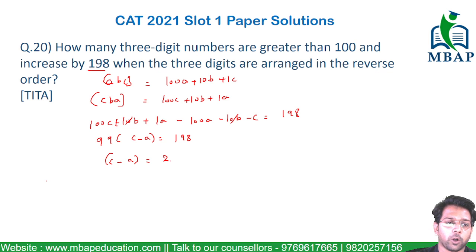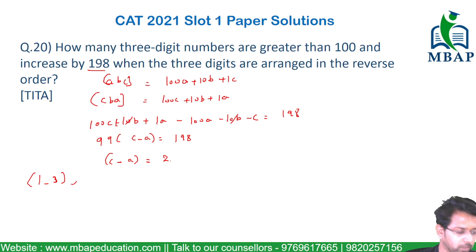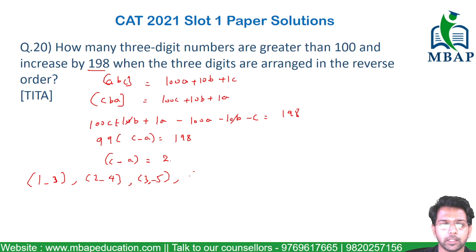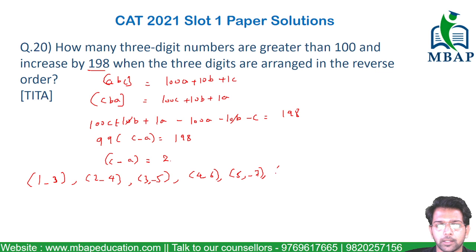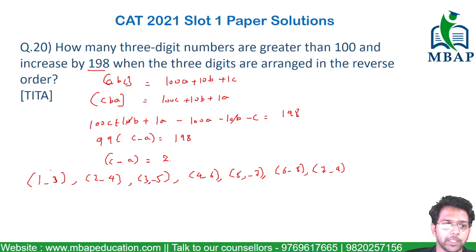Now, which combinations of A and C give a difference of 2 while keeping the number greater than 100? The pairs are: (1,3), (2,4), (3,5), (4,6), (5,7), (6,8), and (7,9). That gives us 7 valid combinations.